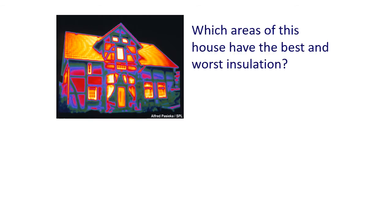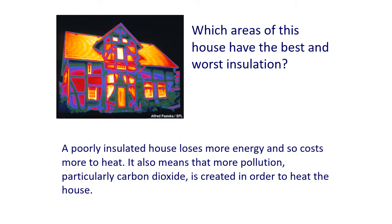This is an example of a house photographed with an infrared camera, which shows the heat energy being released from the house. Discuss with your partners which areas have the best and worst insulation. A poorly insulated house loses more energy and costs more to heat, and also produces more pollution — particularly carbon dioxide. In the infrared image, brighter colours indicate higher temperatures, meaning more energy is being released and the insulation there is poor.